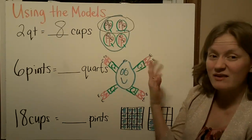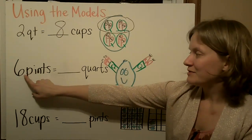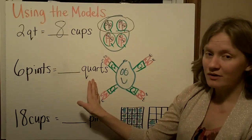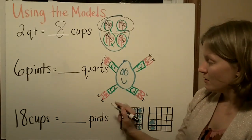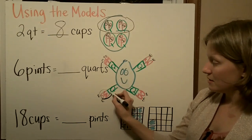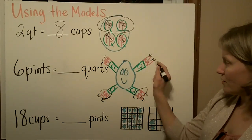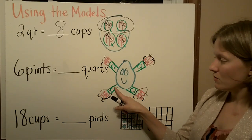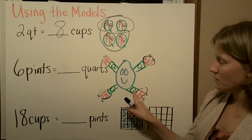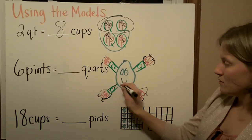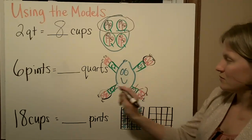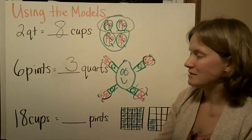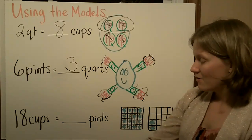You can use gallon man very similarly. If you have six pints and want to know how many quarts, zero in on those six pints. There's two, four, six pints. Those two pints equal a quart, these two equal a quart, and these two equal a quart. So six pints is the same as three quarts.